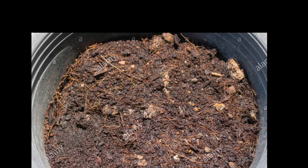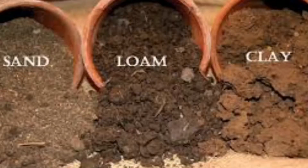Humus is basically the organic component of a soil which is formed by the decomposition of leaves and other plant materials. Now, soils in different environments may vary. So what are the different types of soil?